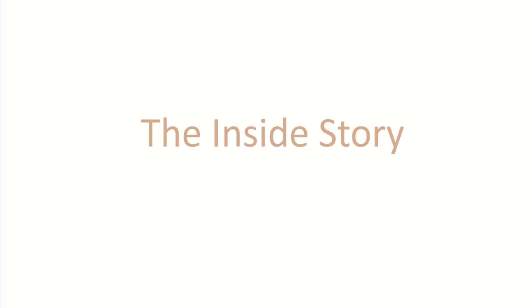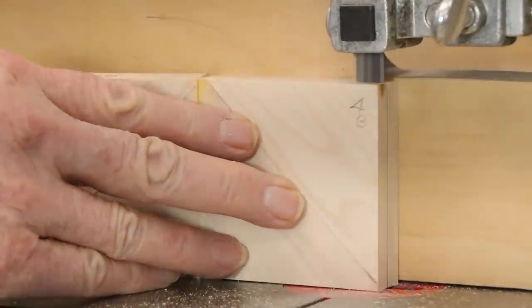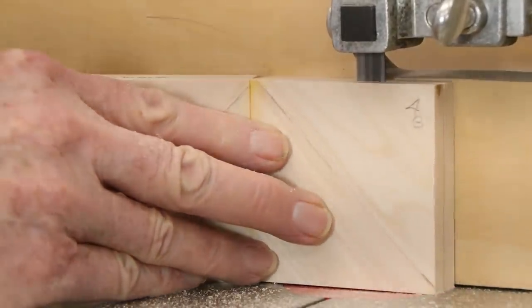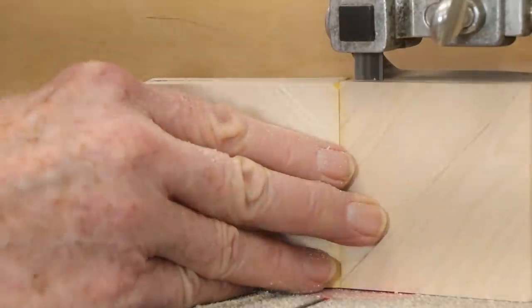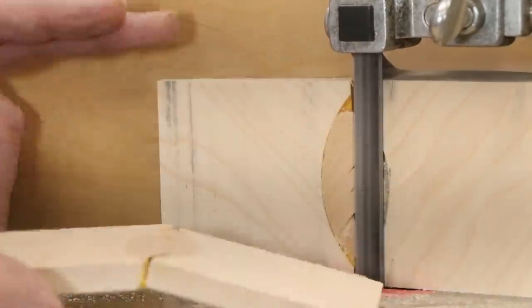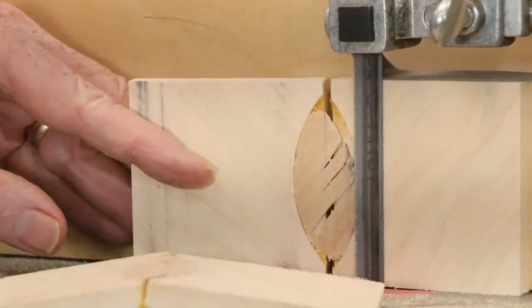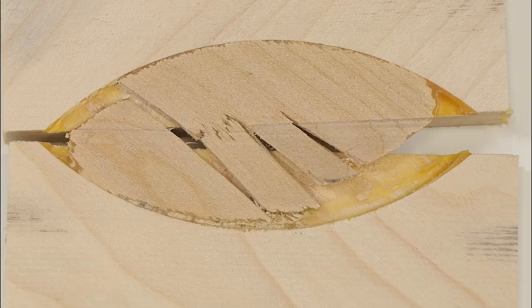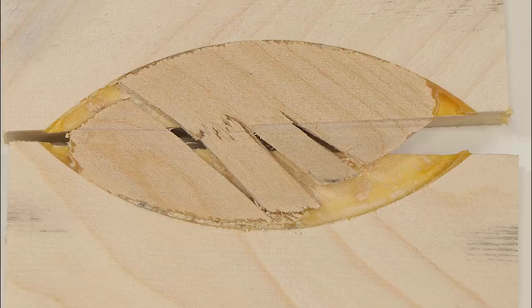Obviously the next step is to cut open the samples that we've broken and inspect the damage. It's immediately apparent that the biscuit is torn apart by the breaking forces. Those forces are very high because end grain joints are so strong and the biscuit is no match for those forces.